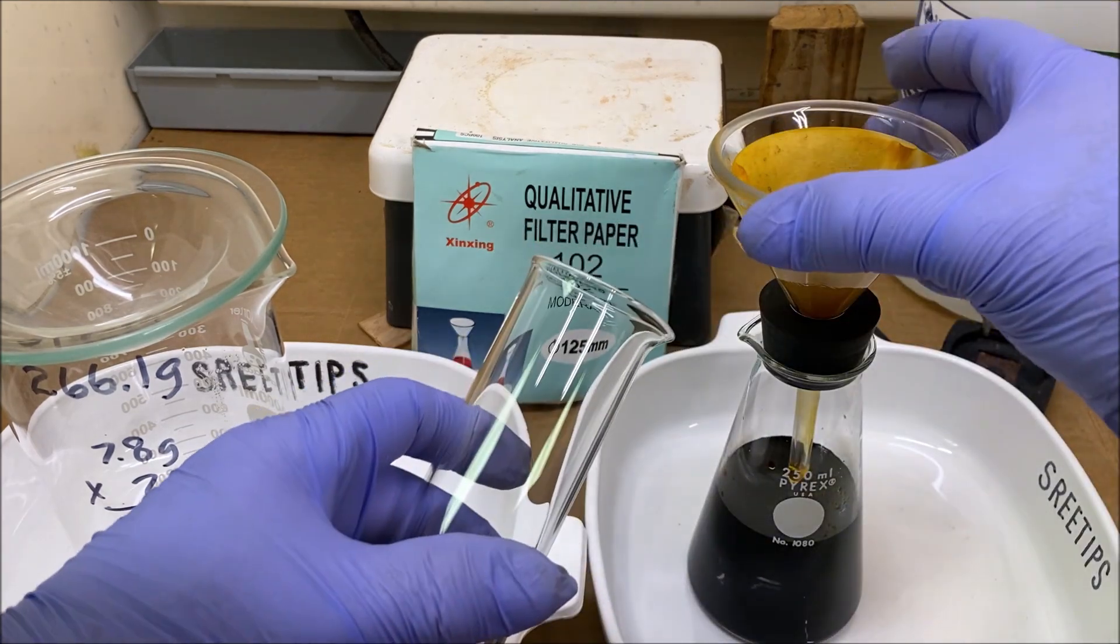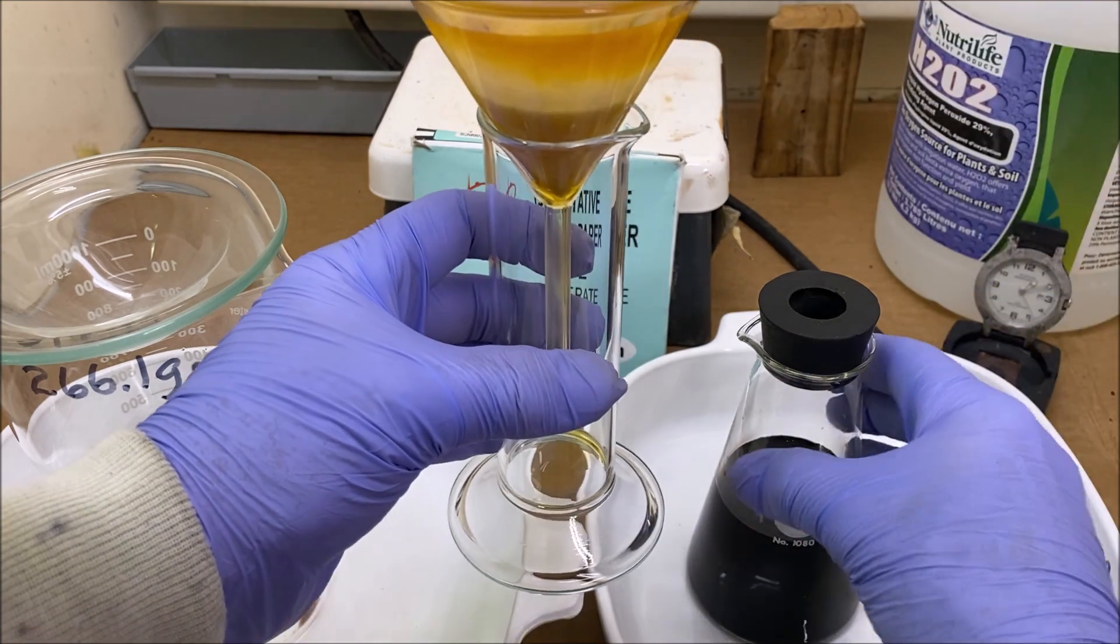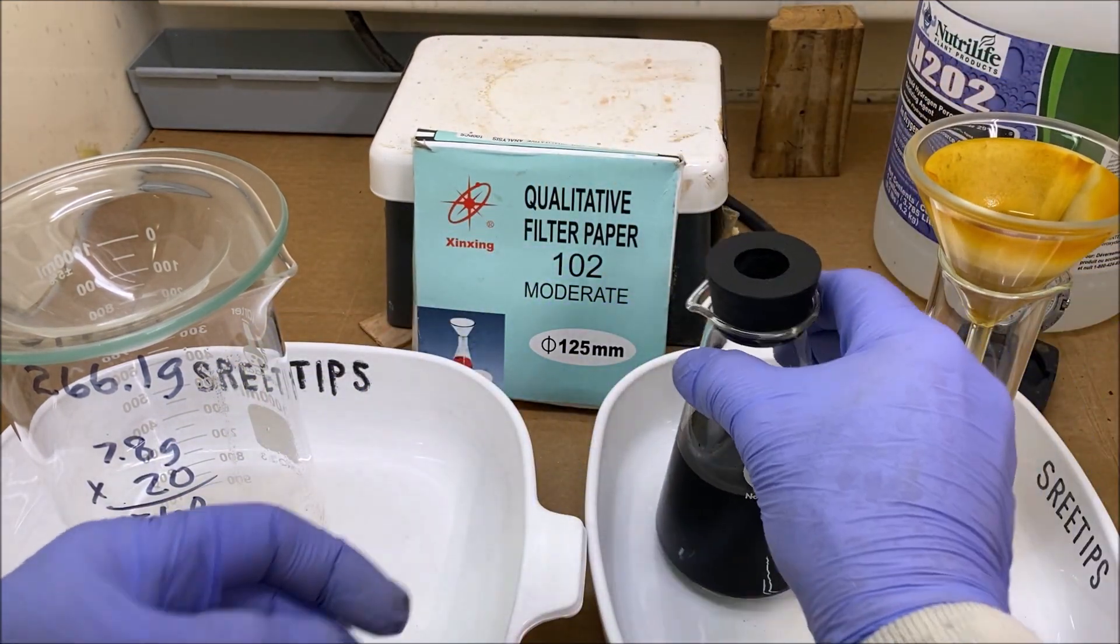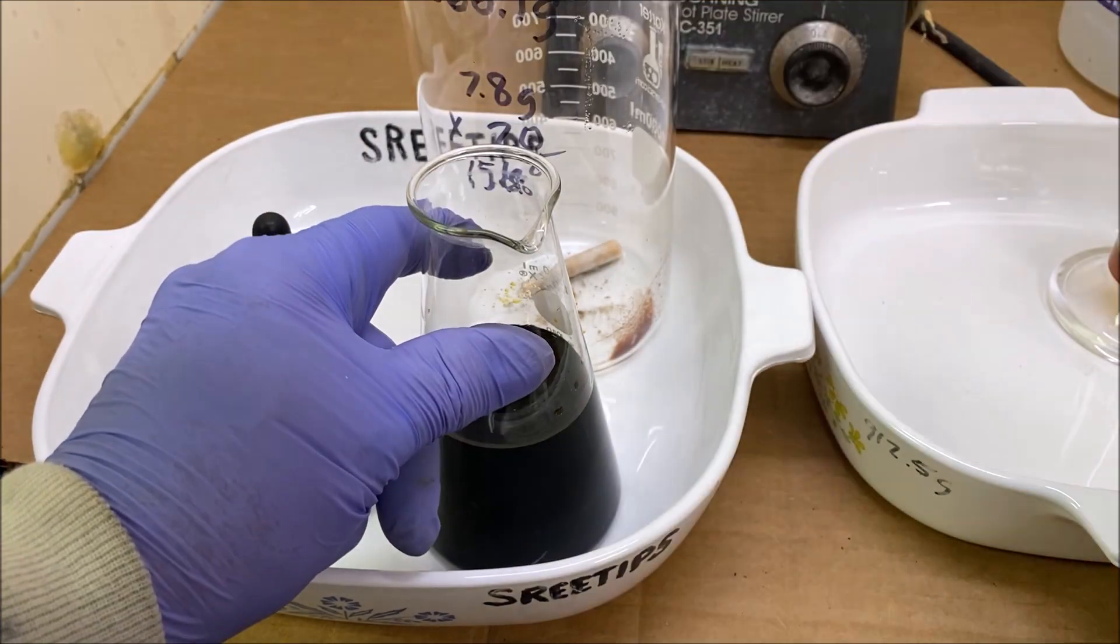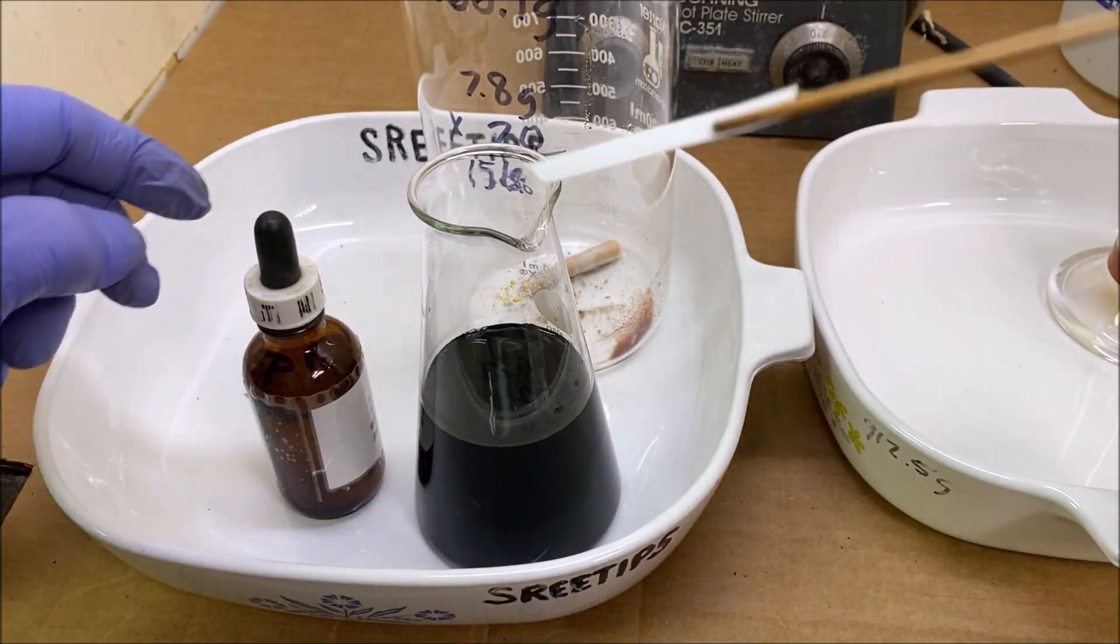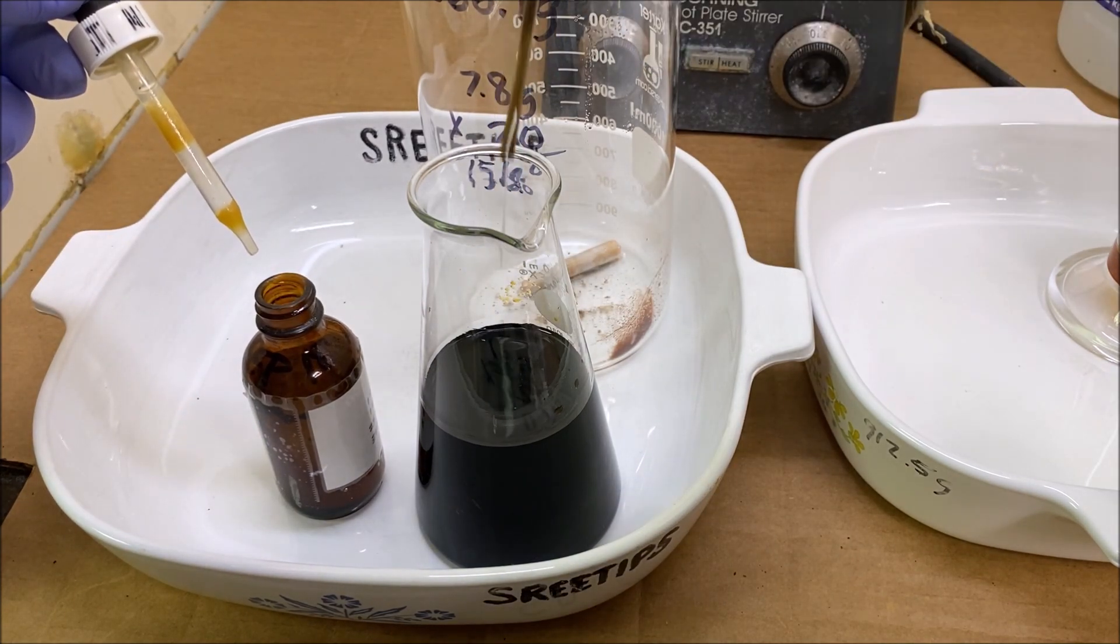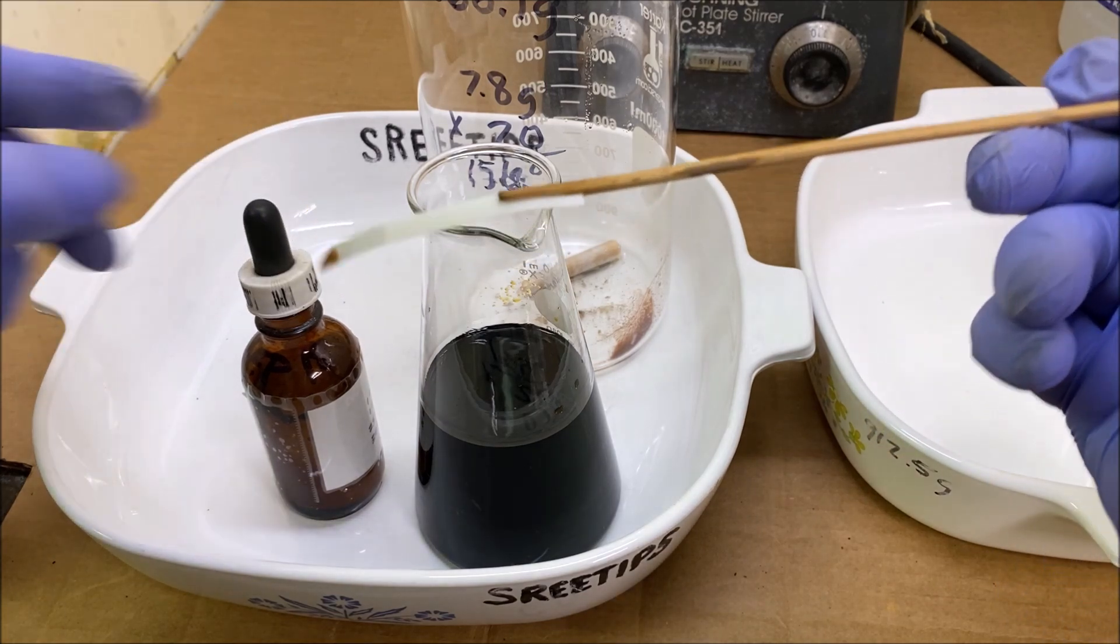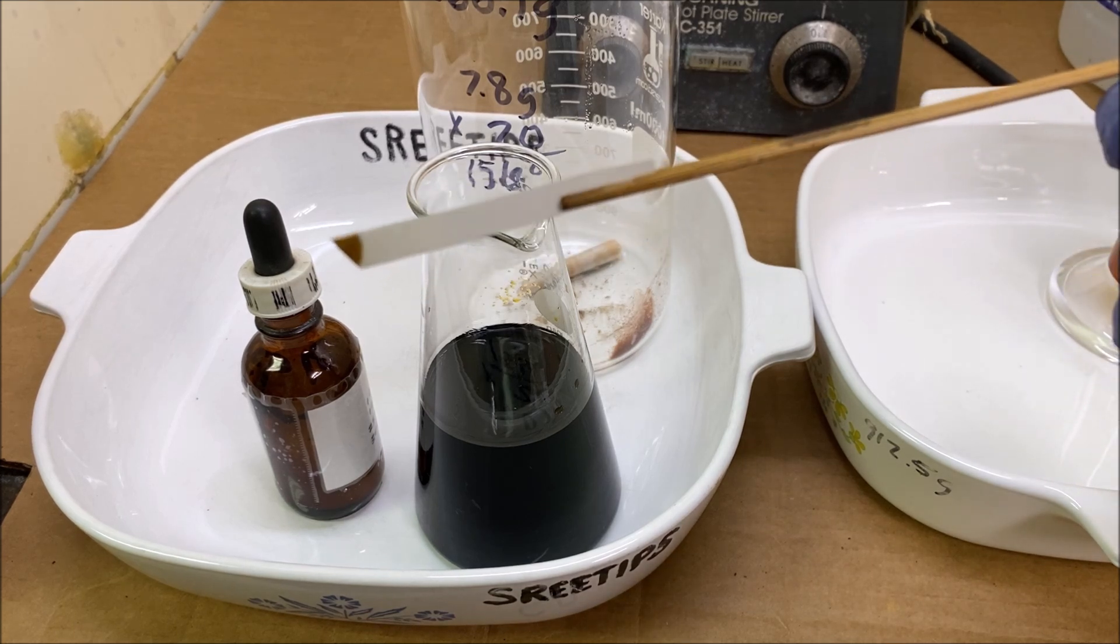I'm going to take this funnel off of here and put it in this little container, and this will be our main solution now that we'll be working with. I'm going to get a little of this solution on a piece of filter paper. I'm going to test this with stannis, and you see I've got a very dark stain going on there, between orange and brown.